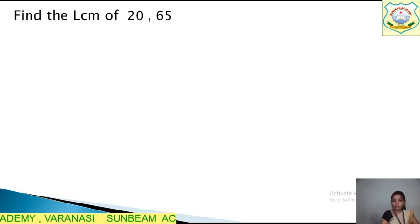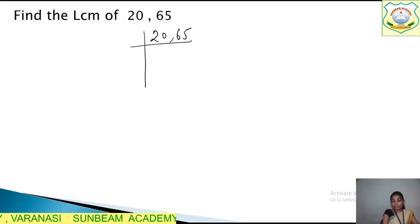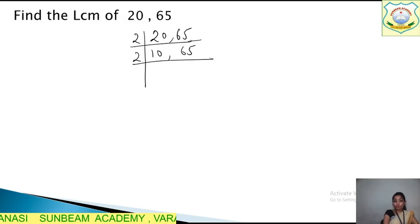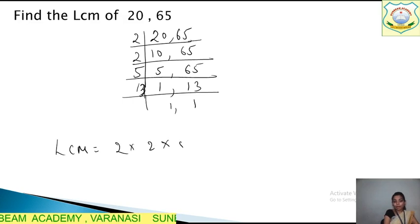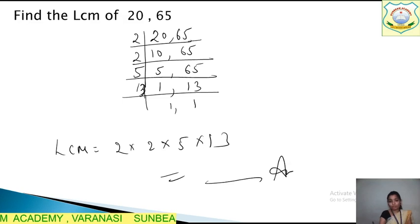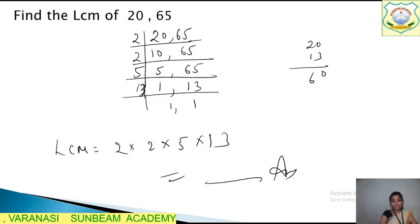Find the LCM. Same way, you will solve it step by step in your notebook and then put a tick mark. I am using the short division method. First divide by 2: 2 tens. Again, 65 is not divisible so we bring it down. Again divide by 2: 2 fives and 65. This goes by 5: 5 ones, 5 ones, 5 thirteens. Now it is divisible by 13. To find LCM, we multiply all these numbers. 2 twos are 4, 4 fives are 20, 20 multiply by 13. 3 zeroes are 0, 3 twos are 6, 1 zero is 0, 2 ones are 2. That is 260.